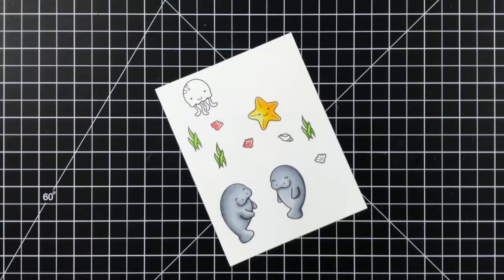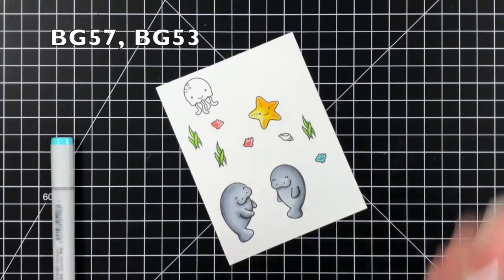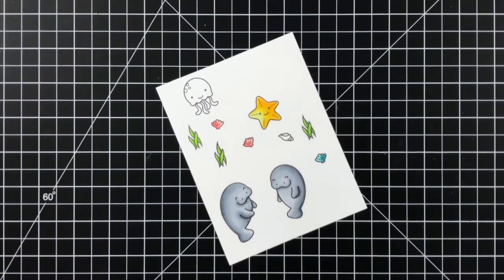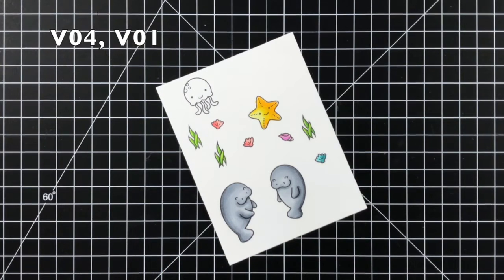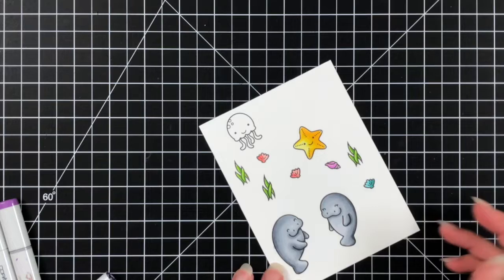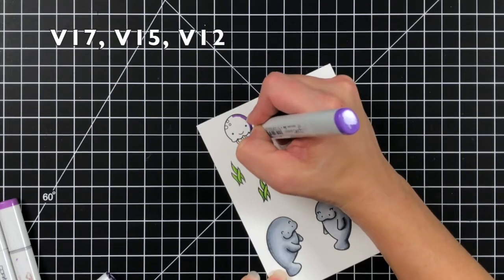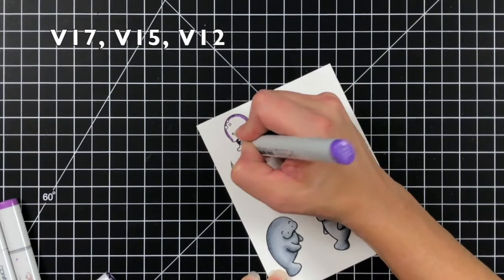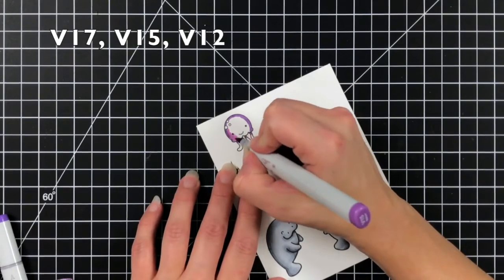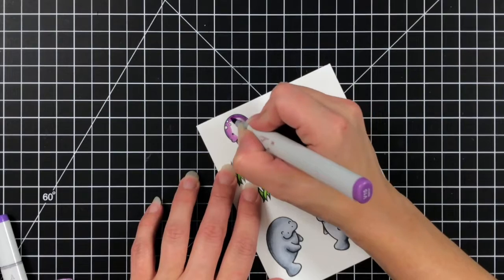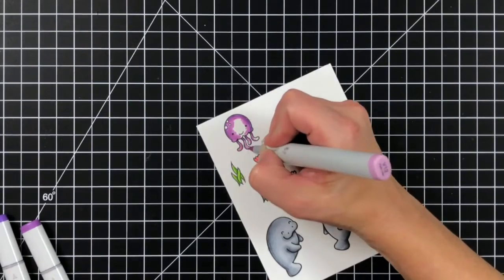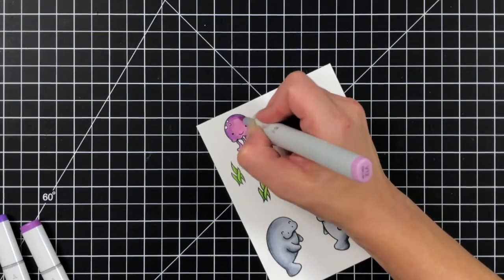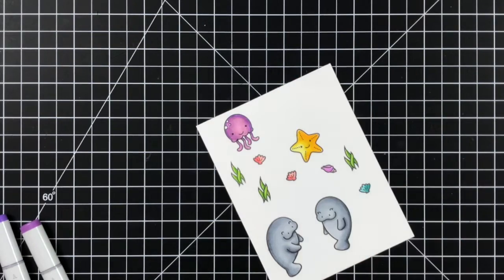When it comes to the shells or the starfish I really didn't have a light source in mind. I just made sure to have one side darker than the other so I always had my darkest and then the lightest just to make sure I had that contrast to them. For my seashells I have VO4 and VO1. I did the other shells and I did R22 and R20, I really like that pink combo.